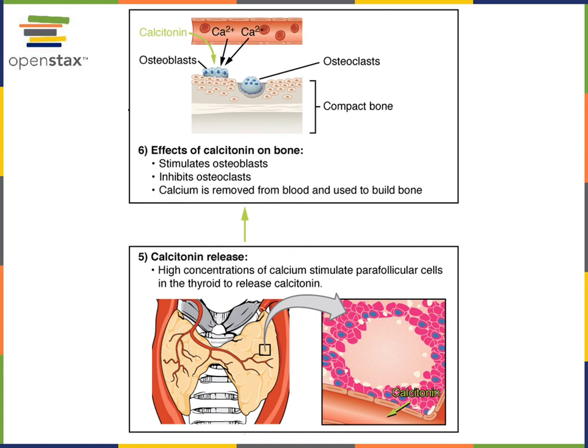In response to hypercalcemia, calcitonin released from C cells in the thyroid gland binds to receptors on osteoblasts in bone, stimulating osteoblasts to store calcium in the bone. Calcitonin also inhibits osteoclasts, reducing the rate of calcium reabsorption from the bone.